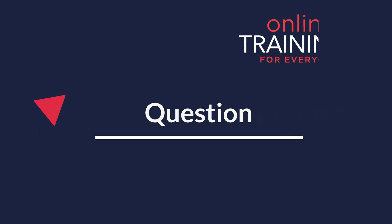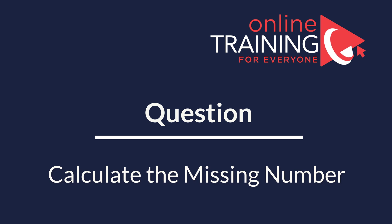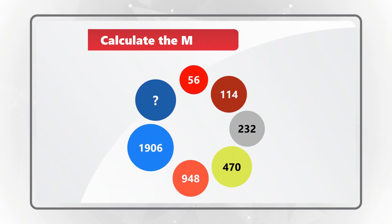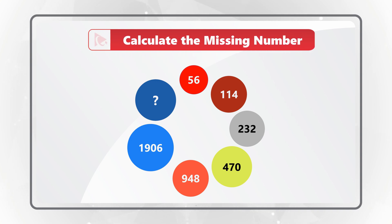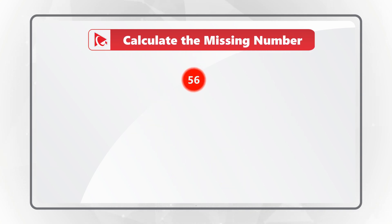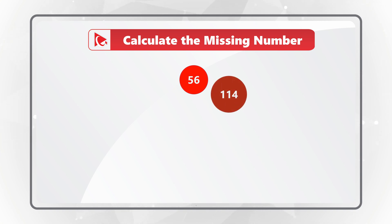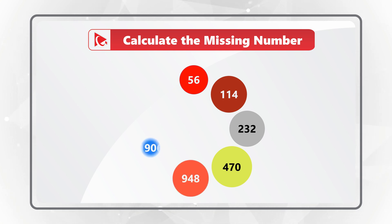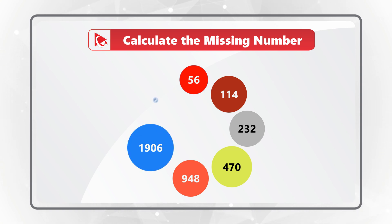Here is an extremely tricky question, but I have full confidence that you will be able to solve it. You are presented with a sequence of circles, which is also organized in a circle. The sequence starts with the red circle with the number 56 inside, then 114, then 232, then 470, then 948, then 1906, and then comes the circle with the missing number.